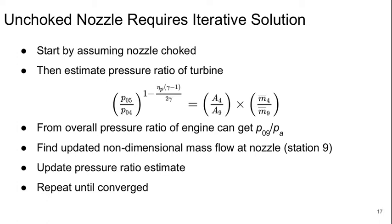On the other hand, if the nozzle is unchoked, then we need to use an iterative solution. To do this, we assume the nozzle is choked even though we don't expect it to be, and we can then estimate the pressure ratio for the turbine. From the overall pressure ratio of the engine, we can get P09 over Pa, then find an updated non-dimensional mass flow at the nozzle at station 9, update the pressure ratio estimate, and repeat until we converge.